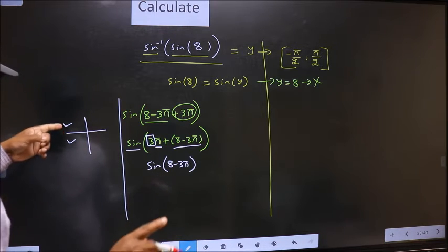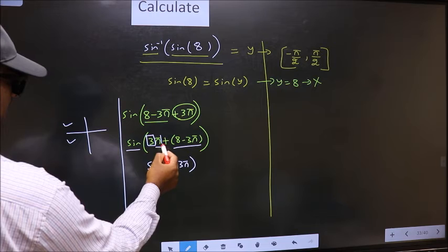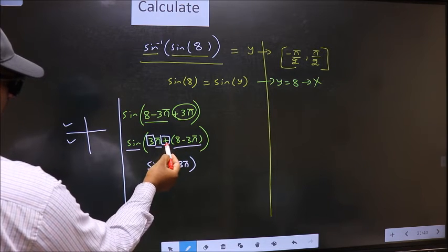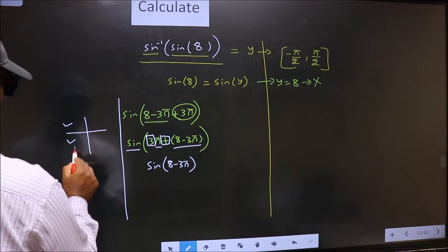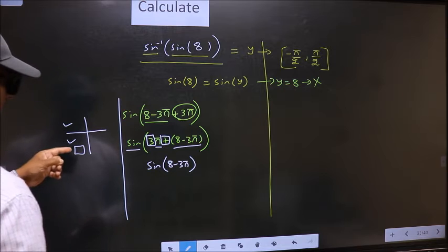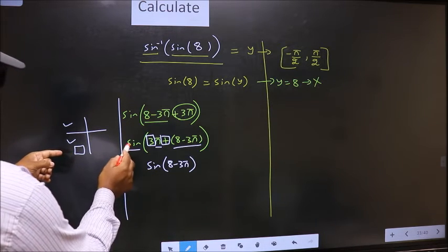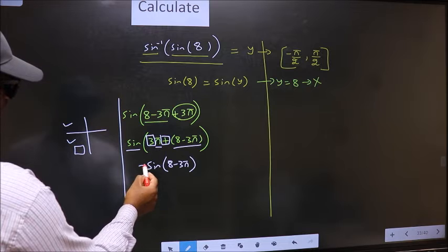So now to select the quadrant we should look at this symbol. Here we have plus. That means angle lies in the third quadrant. And in the third quadrant sin is negative. So put negative.